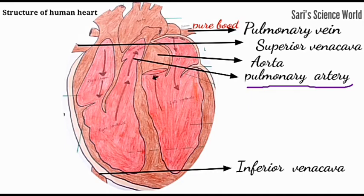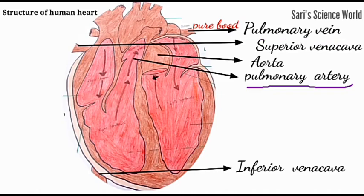After purification, this blood reaches the left atrium through the pulmonary vein. The pulmonary vein is the only vein which carries pure blood. The blood then goes to the left ventricle, and from the left ventricle it goes to different body parts.